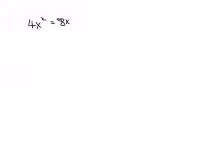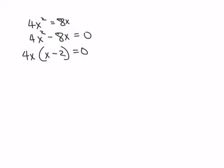Example four. First thing that we do is we always set it equal to zero before we do anything else. So I move the 8x over by subtracting it from both sides. Then I'm going to look and see if I can factor anything out. Yes, I can factor a 4x out. Set that equal to zero.